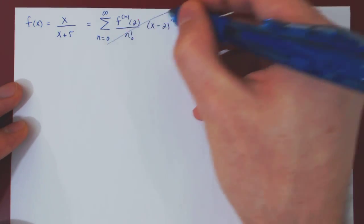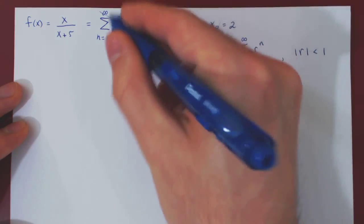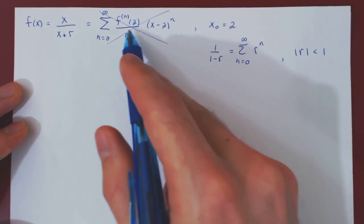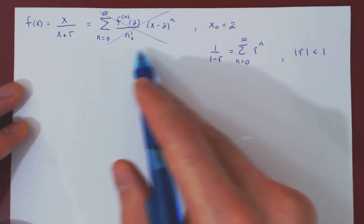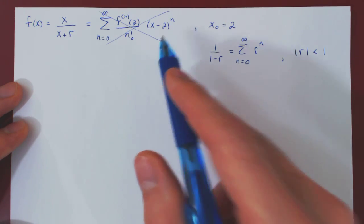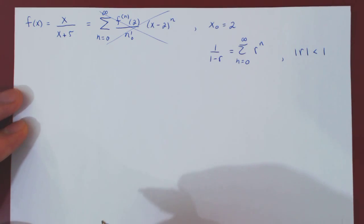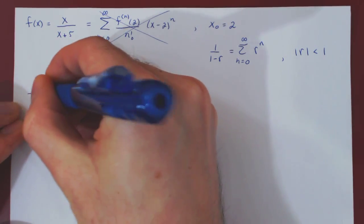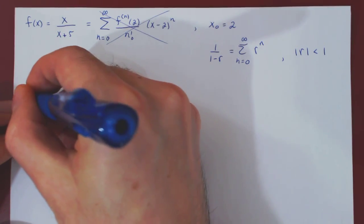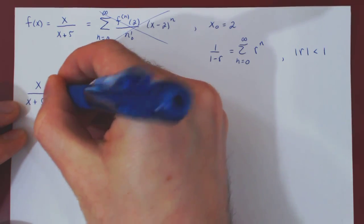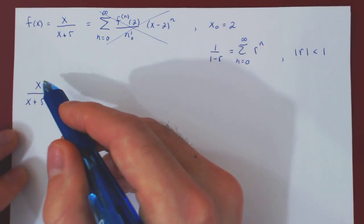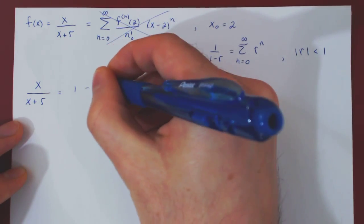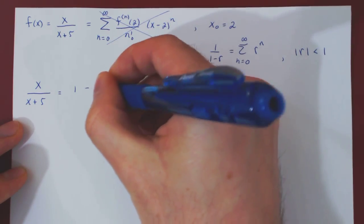We will not find the higher derivatives, but with a little bit of algebra and this equality, we will obtain the exact same Taylor series that we did in the previous video. The first thing is we have a ratio of two polynomials, so we perform long division: divide x by x plus 5, which will return 1 minus 5 over x plus 5.